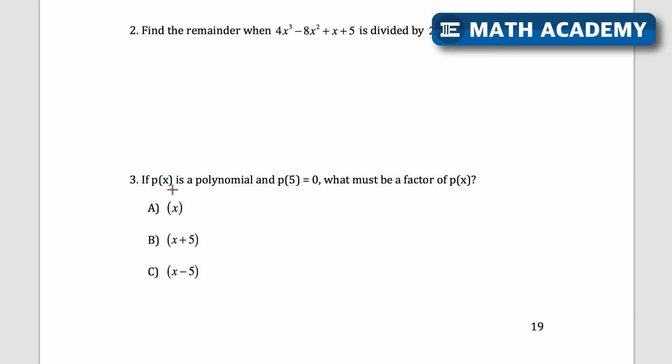Question 3 says, if p of x is a polynomial and p of 5 equals 0, what must be a factor of p of x? So I'm given that if I plug in 5 for this polynomial, I get an output of 0. So this is function notation. Well, that tells me that maybe p of x is something like this. I'm looking for a factor here. So that's something times something times something.